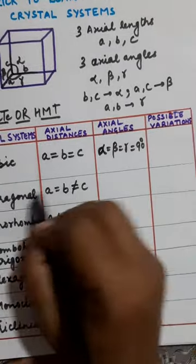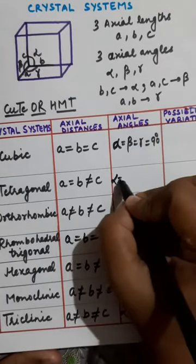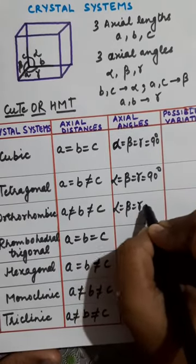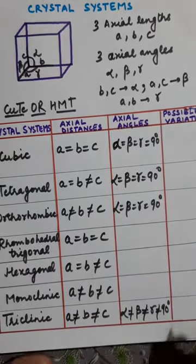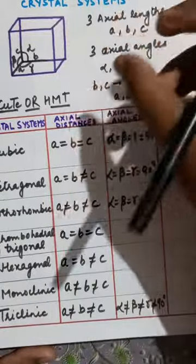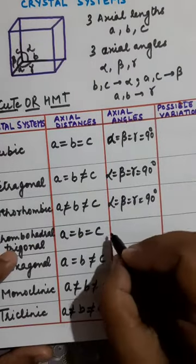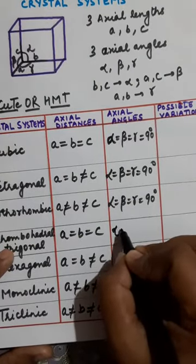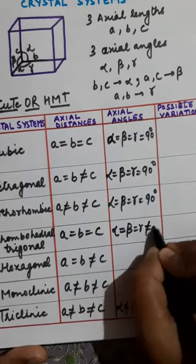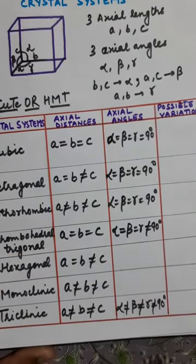Now coming to the axial angles. In cubic, tetragonal, and orthorhombic, all angles are 90 degrees — so these first three are the same. In rhombohedral, the cube has been distorted by pushing it to one side, so all angles are equal to each other but not equal to 90 degrees.